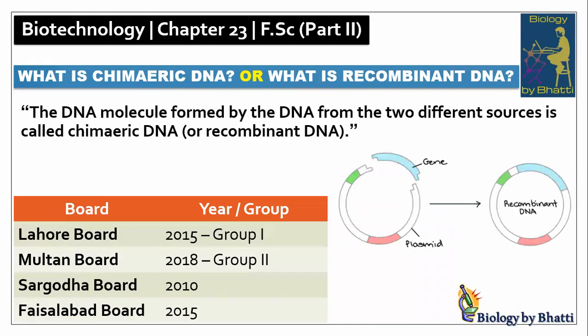Short question number twelve: What is chimeric DNA and what is recombinant DNA? Chimeric and recombinant DNA are two different things. When DNA from another organism is added, that is called recombinant DNA. For example, in the diagram, when a foreign gene shown in blue is inserted into a plasmid bacterial DNA, that becomes recombinant DNA. Past paper references: Lahore board 2015 group 1; Multan board 2018 group 2; Sargoda board 2010; Faisalabad board 2015.